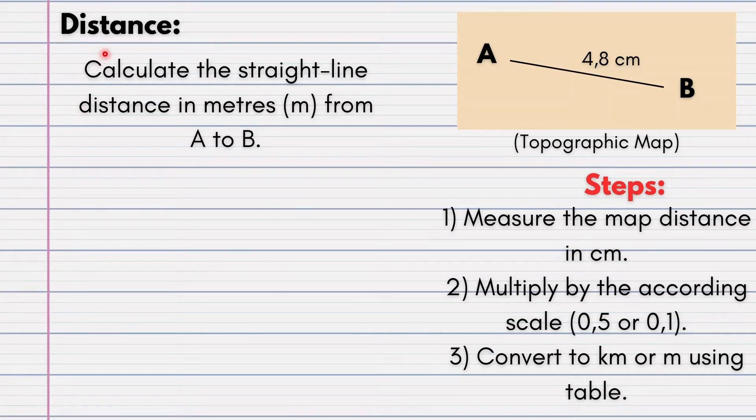Distance is a relatively simple calculation. There's nothing too complicated at all, it's just how you read and comprehend the question. Our question here states, calculate the straight line distance in meters from A to B. Now straight away we can see that they want the answer in meters.